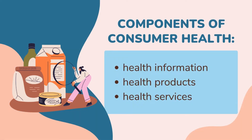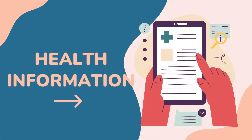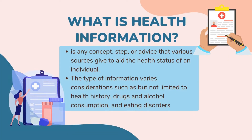Consumer health has three components: health information, health products, and health services. Health information plays a vital role in the life of individuals. It gives details that people can use to make informed decisions about their health and the health of others. Health information is any concept, step, or advice that various sources give to aid the health status of an individual.